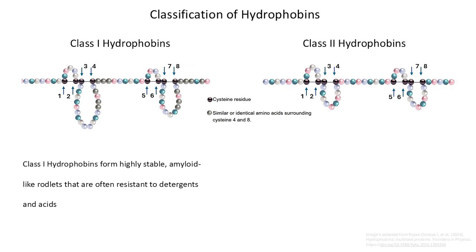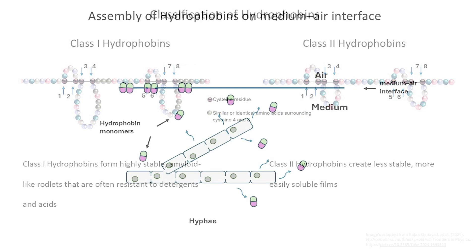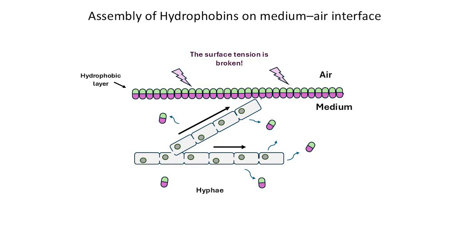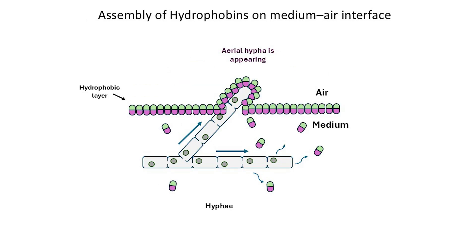Class 1 hydrophobins form highly stable amyloid-like rodlets that are often resistant to detergents and acids, whereas class 2 hydrophobins create a less stable, more easily soluble film. One striking example of hydrophobins in action is their assembly at the medium-air interface during the formation of aerial hyphae, specialized fungal structures that grow above the substrate. Aerial hyphae serve crucial functions such as conidiophore formation, attachment to surfaces, and nutrient foraging. The hydrophobin layer enables aerial hyphae to penetrate the medium-air interface without collapsing in water-saturated environments.